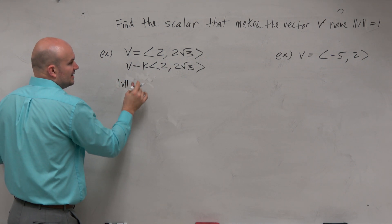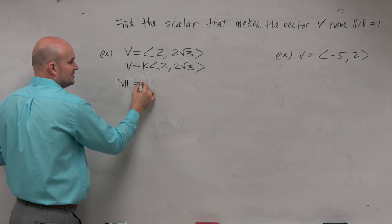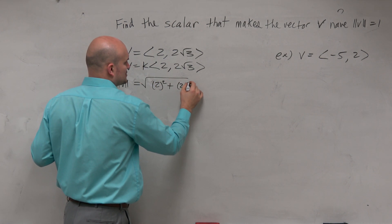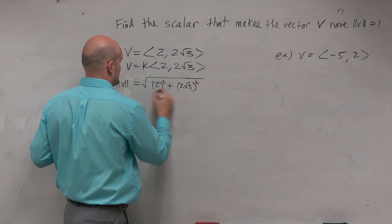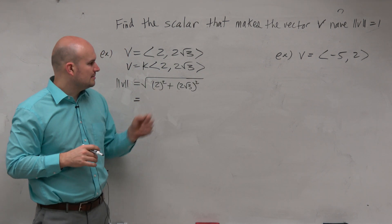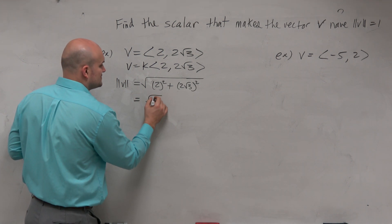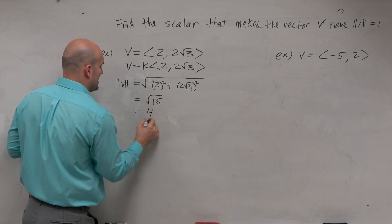So the magnitude of v, if you guys remember from your notes from last class period, is basically just the first component squared plus the second component squared. And therefore, we get 2 squared is 4, and then 4 times 3 is 12. So that equals the square root of 16. So therefore, I get a magnitude of 4.